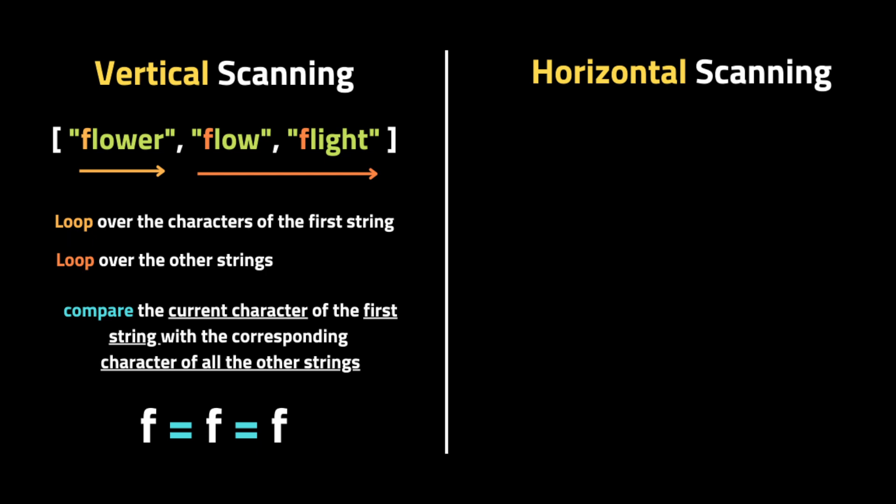To solve this problem there are two techniques we can use. The first is called the vertical scanning algorithm and the second is the horizontal scanning algorithm. Let's start with vertical scanning. Given this list of strings, this technique works by iterating through the characters of the first string, and for each character it iterates through the other strings and compares the current character of the first string with the corresponding character of all other strings. If at any point a character does not match, the loop stops and returns the substring of the first element that matched up until that point.